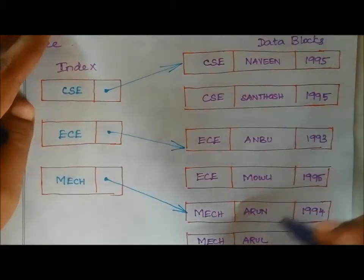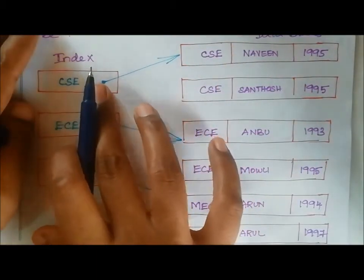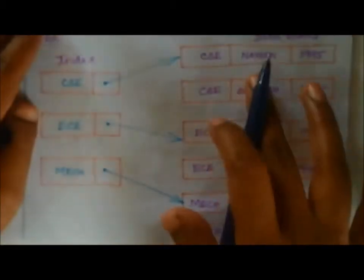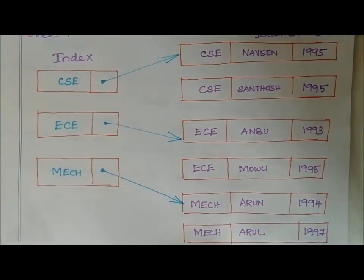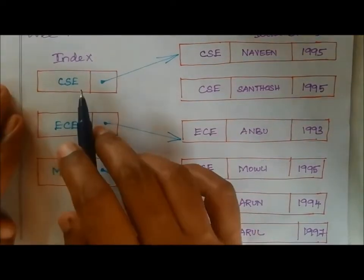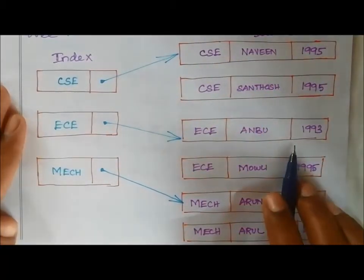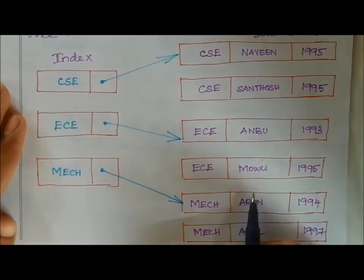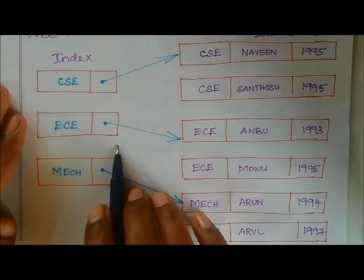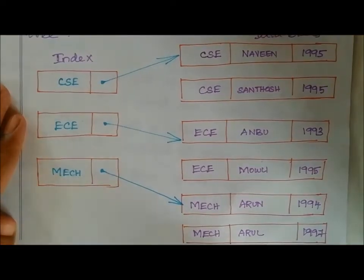Consider the data blocks and records stored. Here we have EC department, CSC department, and Mac department student details. For the CSC department, one index is created, and then for EC. All records appear only for a few records — not created for every search key. This is the example for sparse index.